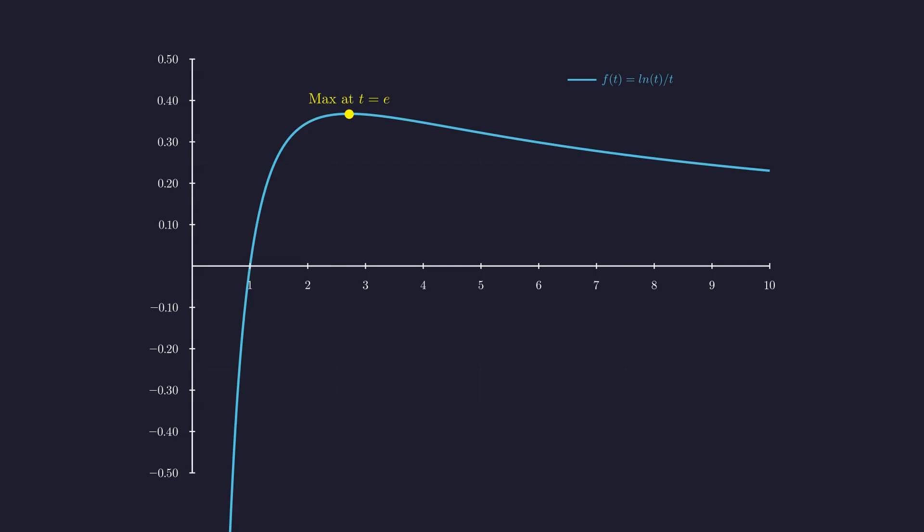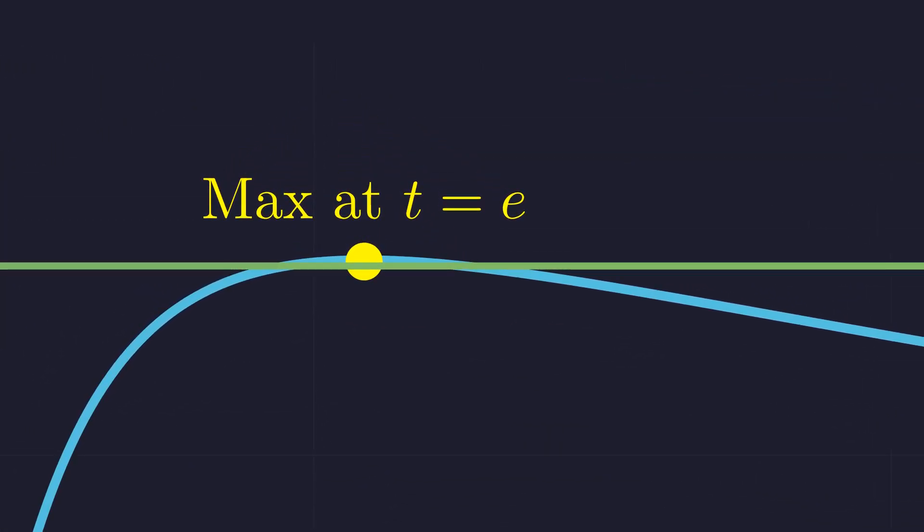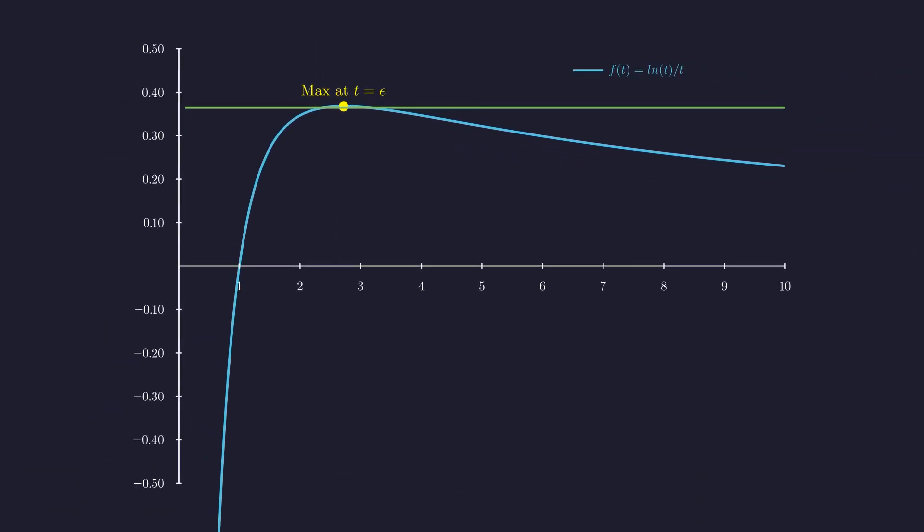So the function reaches its maximum at t equals e. Now here's what matters for us: π is about 3.14, which is bigger than e. That means our known solution x equals π sits on the right side of this peak, where the function is strictly decreasing. Imagine a horizontal line at the height of f of π. On the right side past the peak, this line crosses the curve exactly once at π. But look to the left of the peak where the function is increasing—the line must cross the curve one more time. Let's zoom in to see these intersections clearly. There's our first solution at π, and over here, somewhere between 1 and e, is our second solution. The graph proves it must exist and that it's unique. But what's its exact value? We need a way to calculate it.